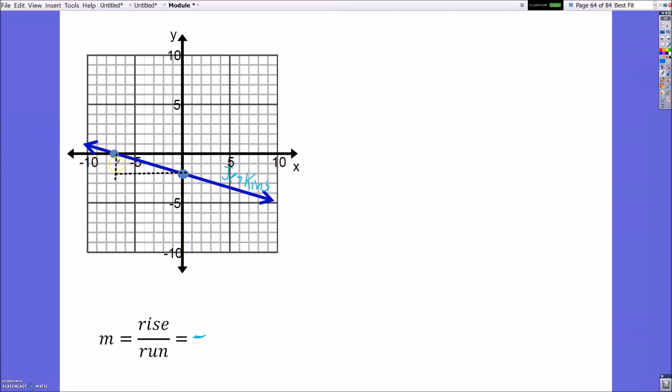Let me double check these by using my pen. So I started here. I went down 1, 2. So I went down negative 2. And I'm going to the right, so I go over 1, 2, 3, 4, 5, 6, 7. So I went over positive 7. So my slope here would be negative 2 over 7. And that negative 2 came from going down here.